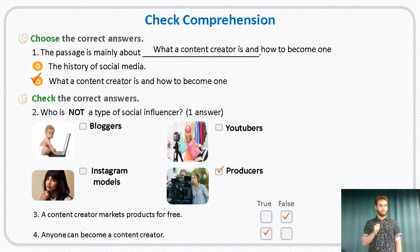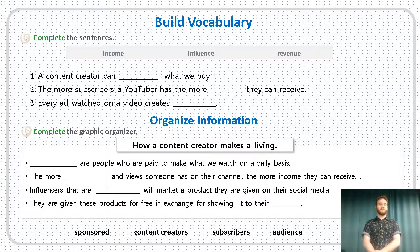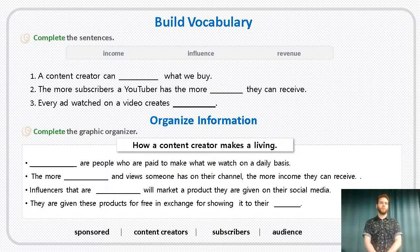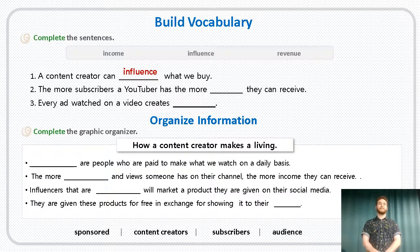All right, let's go on to the next part — the last page. We're going to complete some sentences. The words we have to use are income, influence, and revenue. Starting with number one: a content creator can do this for what we buy — so a content creator can influence what we buy. Good job.